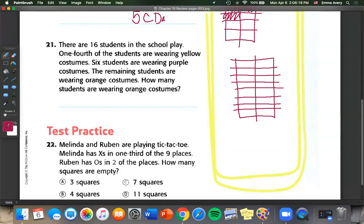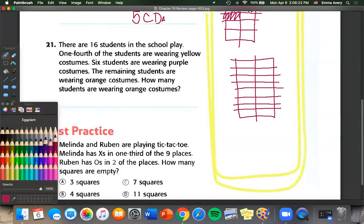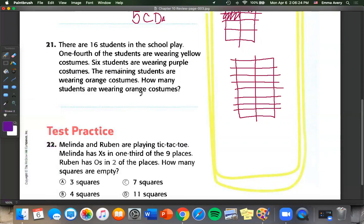So let's start with the number of students that were wearing purple because that gives us a number. So six students are wearing purple. So we can color in one, two, three, four, five, and six.